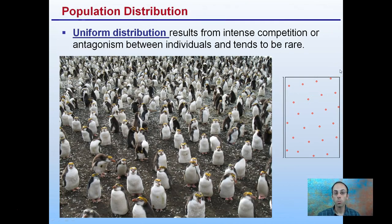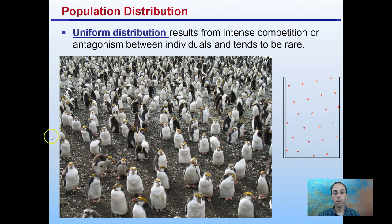Here we have a uniform distribution, which results from intense competition or antagonism between individuals and also tends to be rare. You can see with the penguins, the distribution is very evenly spaced — kind of like students in a class viewed from the teacher's standpoint. We typically see in classes kids talking or on their phones, but here most of the penguins are nicely facing the camera, paying attention.